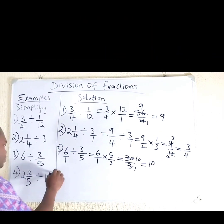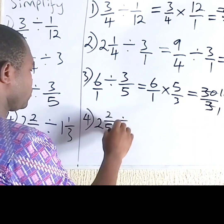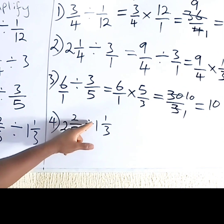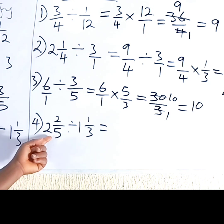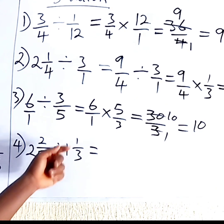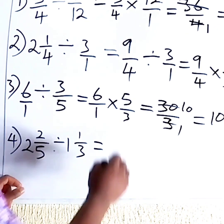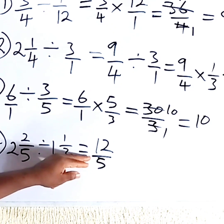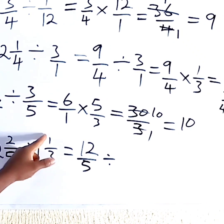Number 4: we have 2 whole number 2 over 5, divided by 1 whole number 1 over 3. First of all, we need to change both mixed numbers into improper fractions. For the first: 5 times 2 is 10, plus 2 gives 12. So we have 12 over 5. For the second: 3 times 1 is 3, plus 1 gives 4. So we have 4 over 3. We now have 12 over 5 divided by 4 over 3.